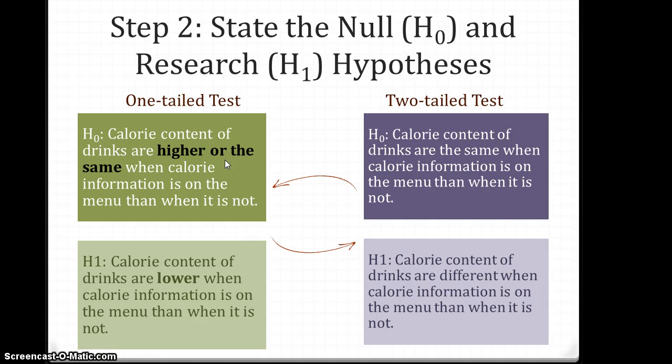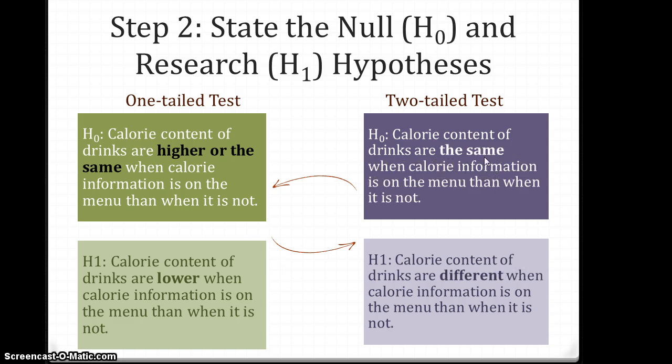This is the main difference that we see, that we say it's higher or the same for the null hypothesis and it's lower for the research hypothesis, compared to the same for the null hypothesis in a two-tailed test and different for the research hypothesis in a two-tailed test. Those are the changes we see in step two.